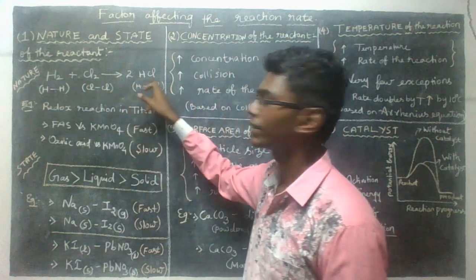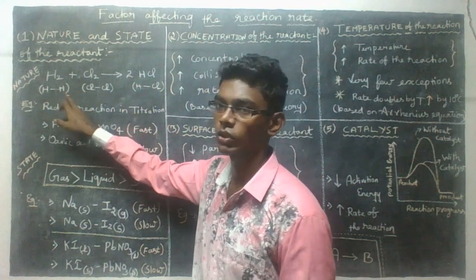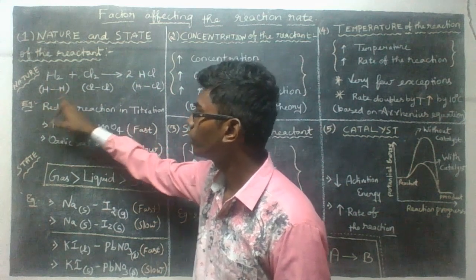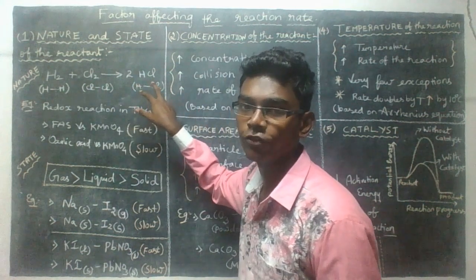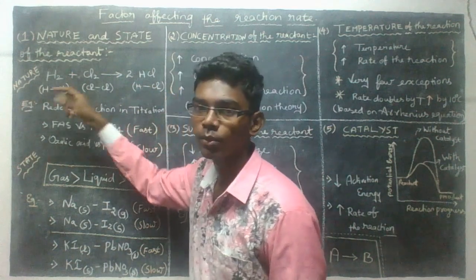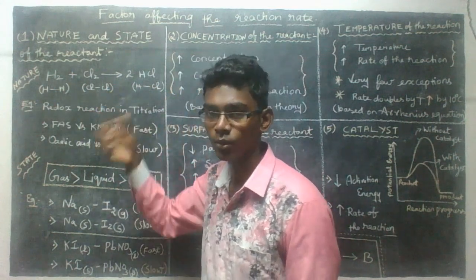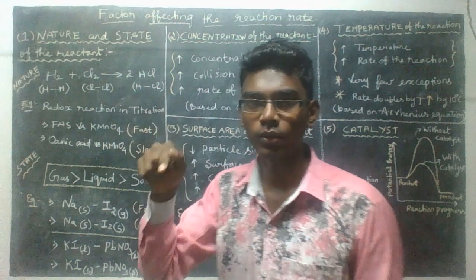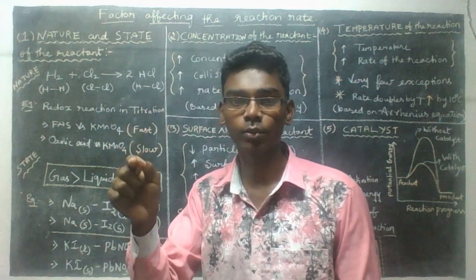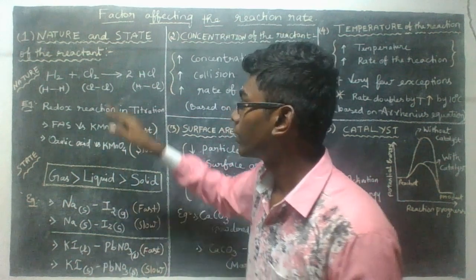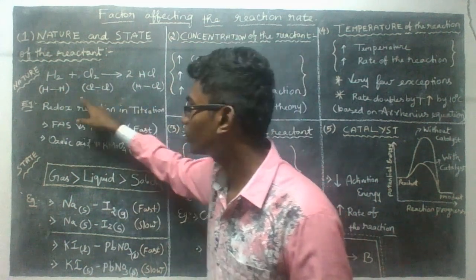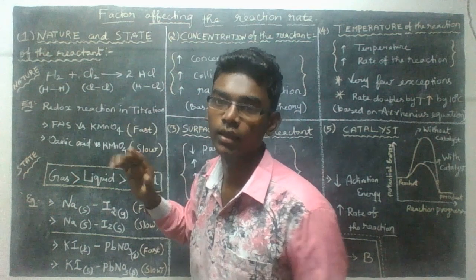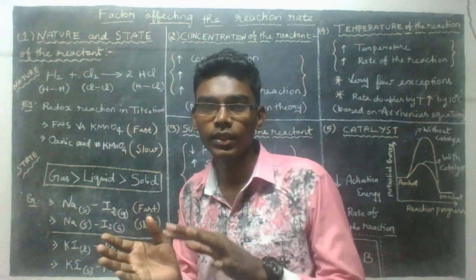H2 plus Cl2 gives 2 HCl. Cl2 is a Cl-Cl bond. The reaction rate is slow. So if the bond is a little weak, it will be slow. If the bond is a little strong, the reaction will be slow. When the reactant bond is weaker, the speed will increase.